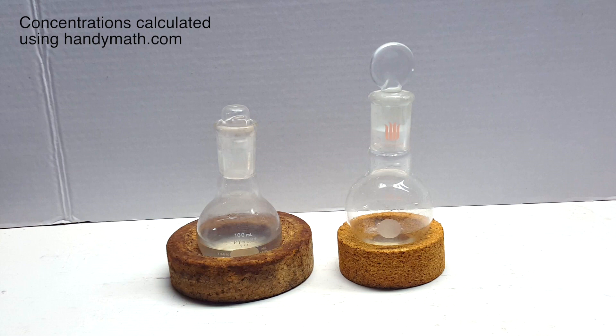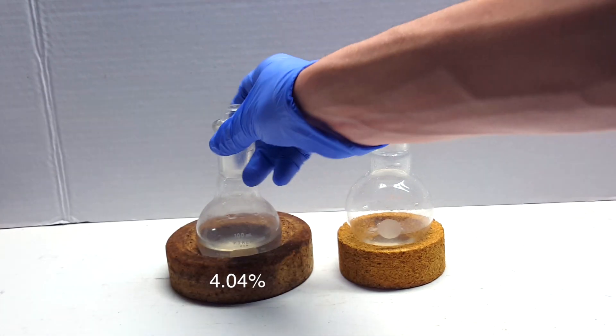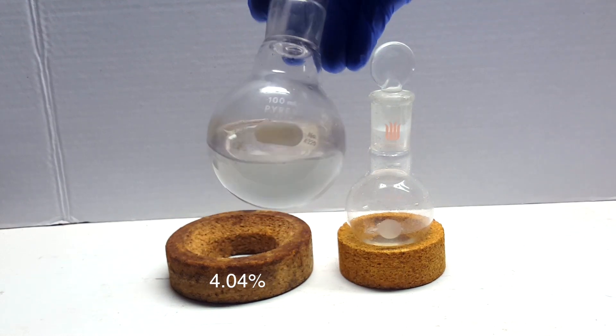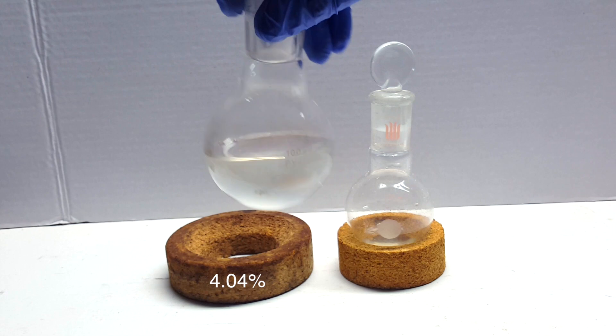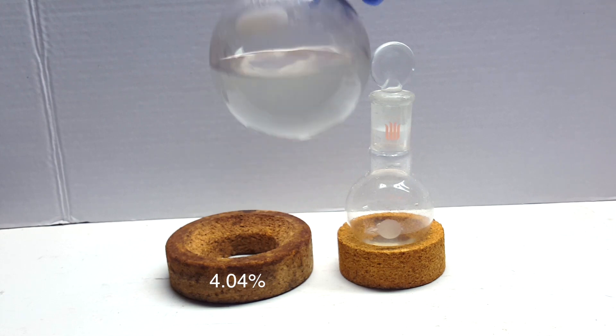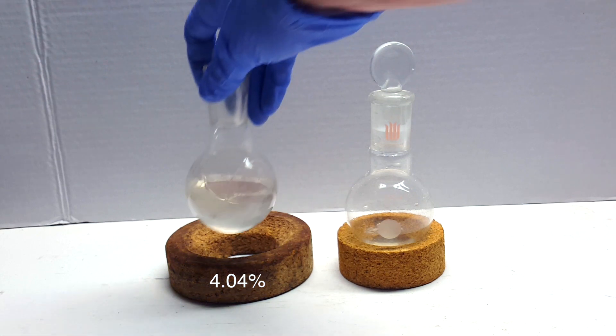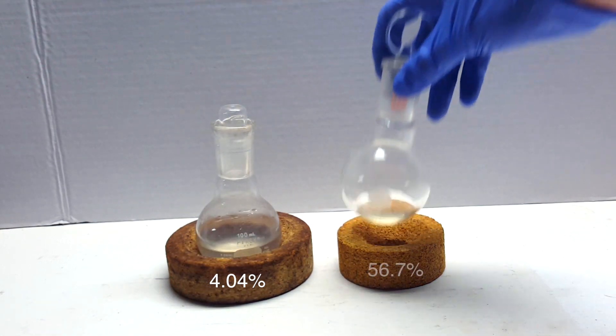I found the density of the second two solutions just like in the previous video, and plugged the values with the temperatures into the same website. The solution on the left had a concentration of 4.04% phosphoric acid. This value is actually less than the starting dilute phosphoric acid added to this batch. While the first solution was disappointing, the second had a concentration of 56.7%.